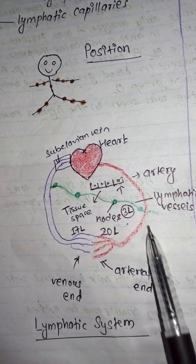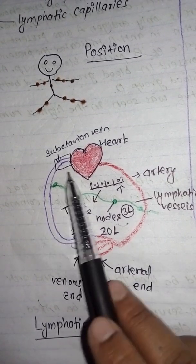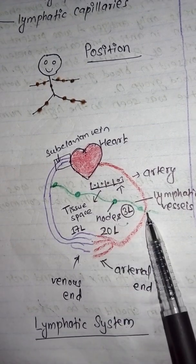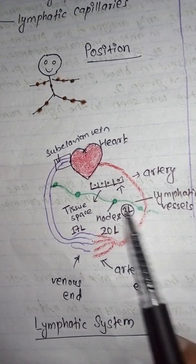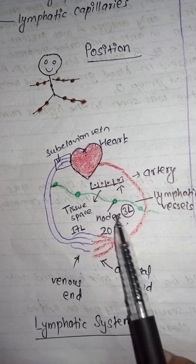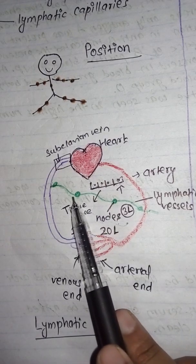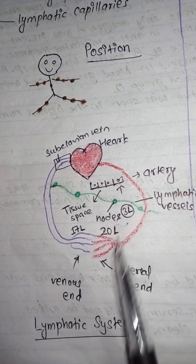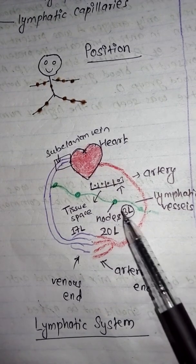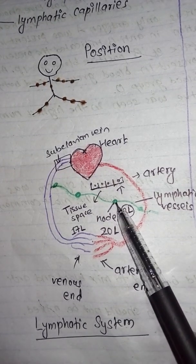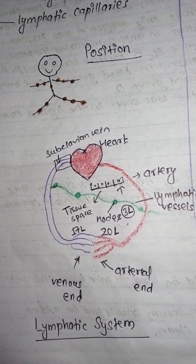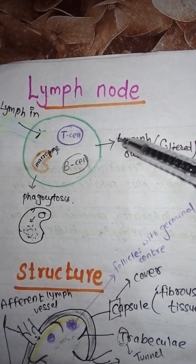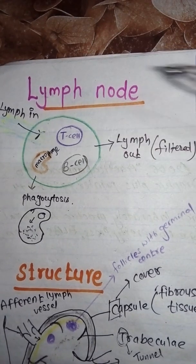This lymph moves in a unidirectional manner — it moves upward toward the heart, passing from one node to another node. Today we are going to talk about these lymph nodes in detail.